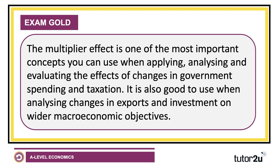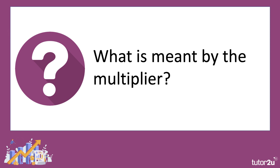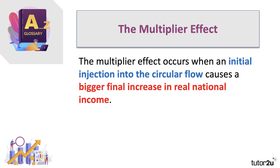The multiplier is great to use when applying, analyzing, and evaluating the effects of, for example, a change in government spending or a change in taxation. It's also useful when analyzing changes in export sales or changes in investment on the wider economy, including real GDP and employment. The multiplier effect occurs when an initial injection of demand and spending into the circular flow causes a bigger, larger final increase in real national income — GDP adjusted for inflation.